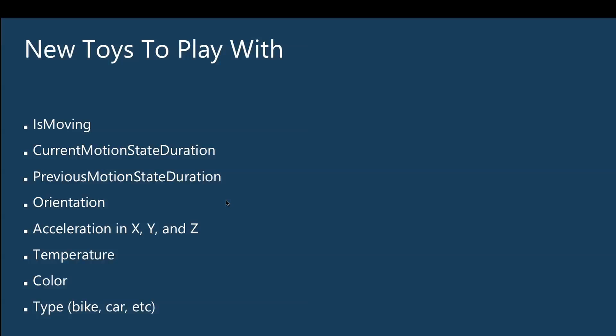These types are actually just printed on the stickers — there's no reason you couldn't say the car sticker represents something else. It doesn't actually know it's a car; it's just whatever is printed on the sticker. You can change that on their backend at cloud.estimote.com. The trigger system is really advanced — there are multiple triggers, and you can create your own trigger sets using proximity rules, motion rules, orientation, temperature, and date ranges.